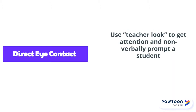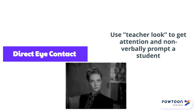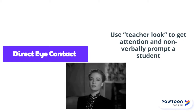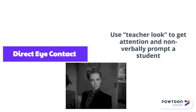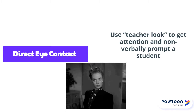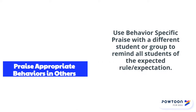Use your teacher look — direct eye contact — to get the attention and nonverbally prompt a student to get back on track. When you praise appropriate behaviors in others, you help kids get back on track by looking for those who are doing the right thing and praising them publicly.